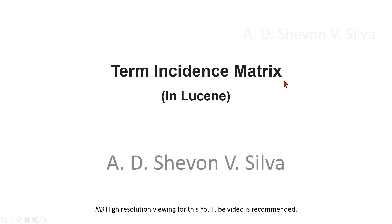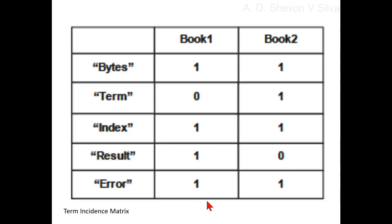The term-document incidence matrix maps a term to the documents that hold the given term. It is a two-dimensional matrix where the columns represent the name of the book and the rows represent the terms involved. Here you can see a term incidence matrix with the books and the terms shown.